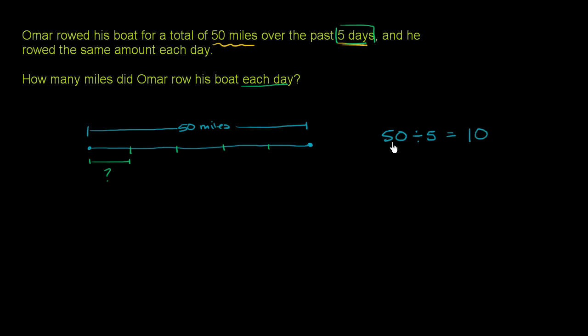So if he goes 50 miles over five days, you divide by the five days, he goes 10 miles each day. And we're done.